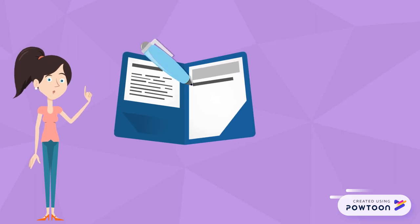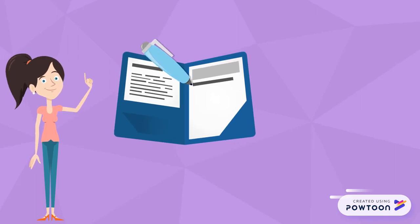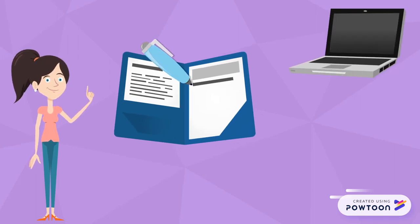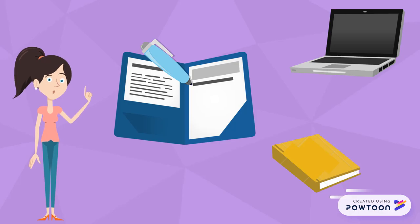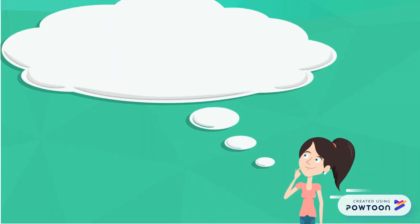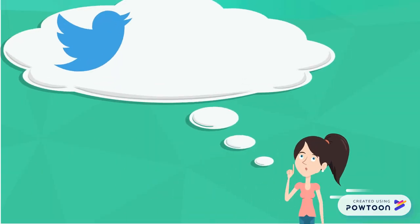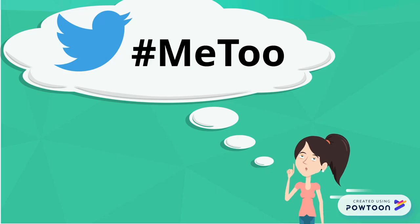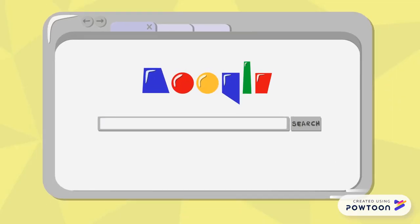Maria is writing a research paper for her class using scholarly sources such as peer-reviewed articles and academic books. She is interested in looking at the role of social media in launching the MeToo movement, a movement that denounces sexual assault and harassment. She starts her background research on Google, and although the movement only broke in October 2017, there are already over 90 million results available.